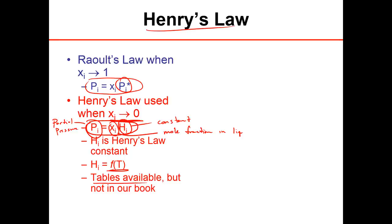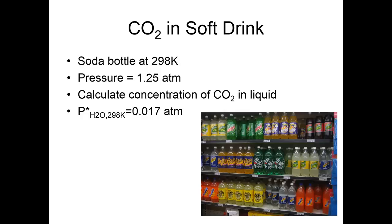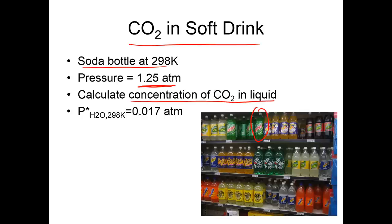Tables of Henry's Law constants are available — for example, from Wikipedia — though not in the textbook we're using. Here is CO₂, which is of interest for our next example problem: how much CO₂ is in a soft drink? Let's say we have a soda bottle at 298 K, and a pressure gauge shows the pressure is about 1.25 atmospheres. We want to calculate the concentration of CO₂ in the liquid using Henry's Law.